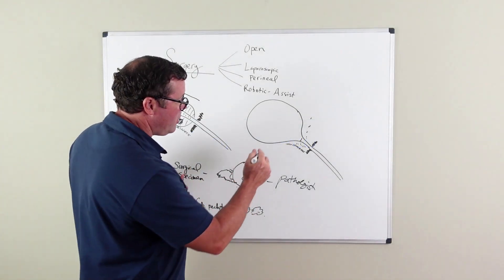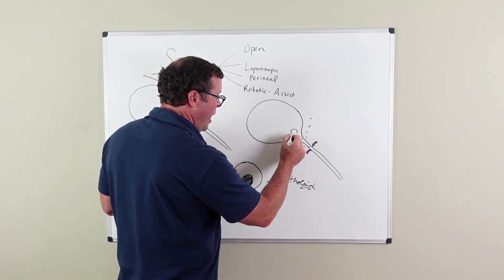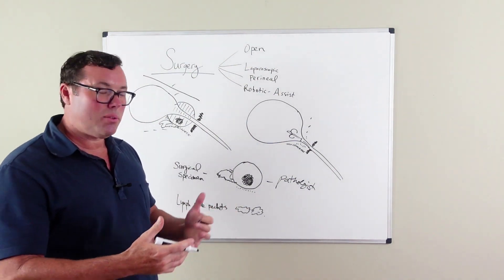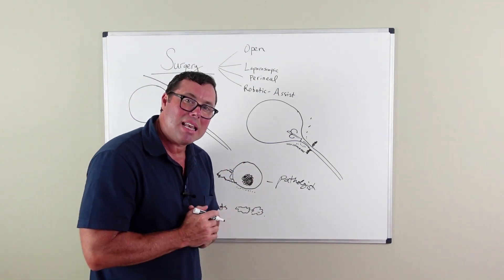With prostate surgery, you're almost always going to have a catheter in place. And the catheter may be in place for anywhere from seven to ten days.